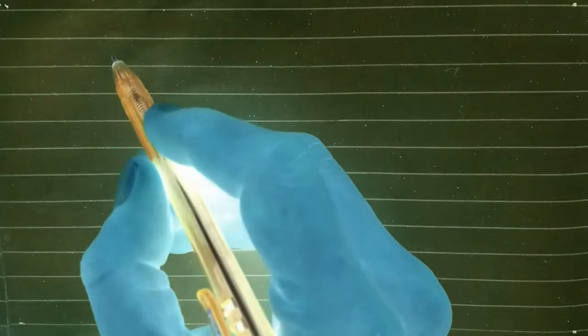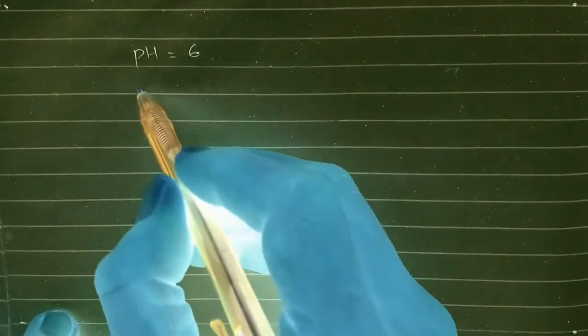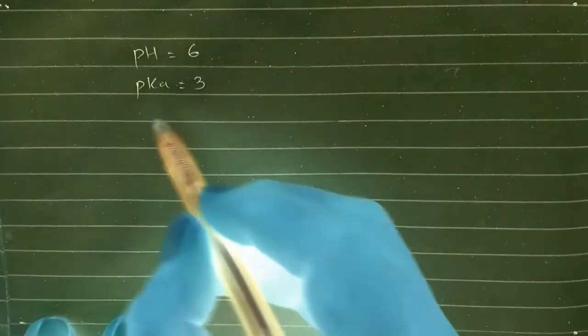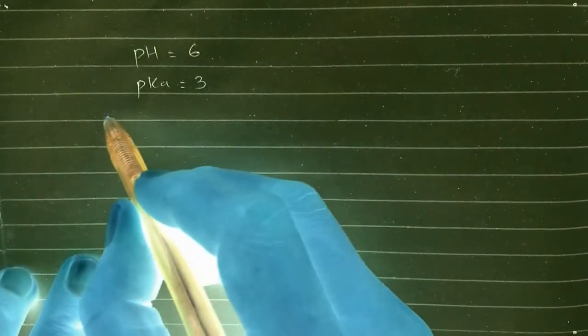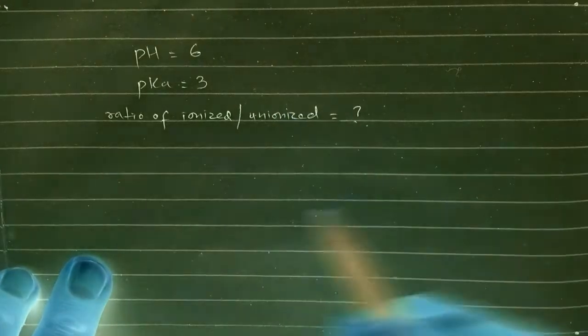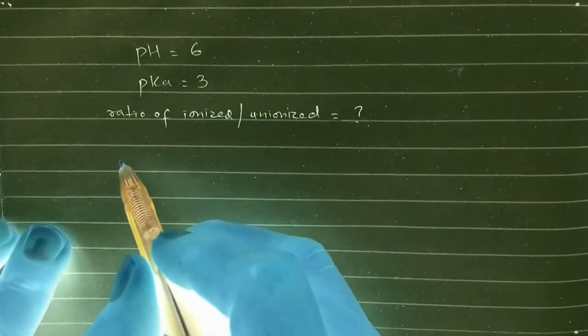So for this calculation problem, the data given is pH 6, pKa value given is 3, and we have to find the ratio of ionized to unionized. So this is our question here.